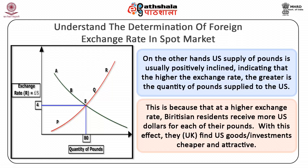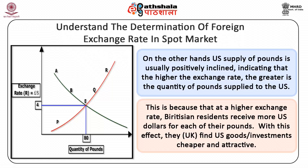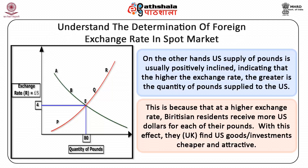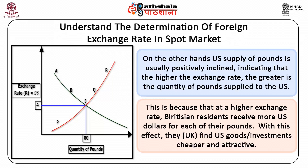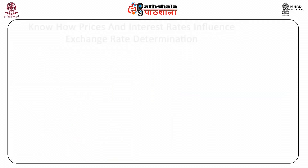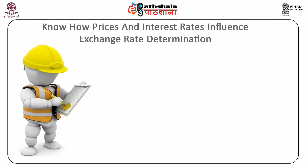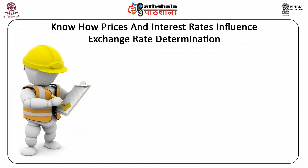With this effect, the UK finds US goods or investments cheaper and attractive. In the above diagram, points like A, B, P, Q and R refer to the scenario of disequilibrium in the foreign exchange market. This is because there is no intersection between demand for and supply of currencies. Next, we will discuss how prices and interest rates influence the exchange rate determination.